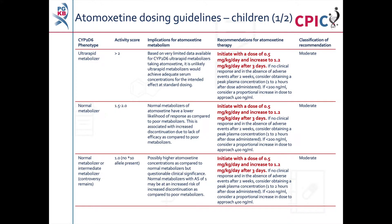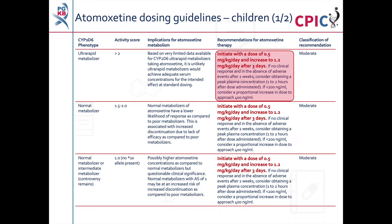These are the CPIC dosing recommendations for atomoxetine in children. Patients with a CYP2D6 ultra-rapid metabolizer phenotype are unlikely to reach adequate serum concentrations of atomoxetine using standard dosing; however, this observation is based on limited data. These patients should begin atomoxetine therapy at a dose of 0.5 mg per kg per day, increasing to 1.2 mg per kg per day after 3 days. If there are no side effects or clinical response after 2 weeks of treatment, obtaining a peak plasma concentration 1-2 hours after administration should be considered. If the peak plasma concentration is less than 200 ng per mL, a dose increase should be considered. This is a moderate recommendation.